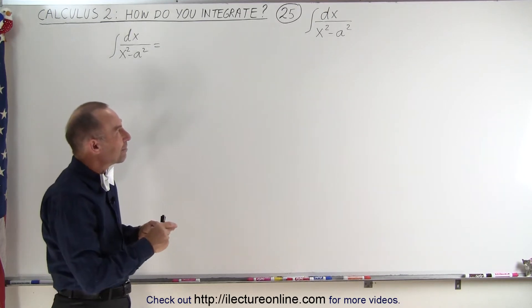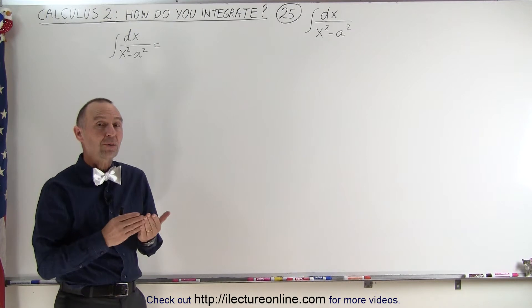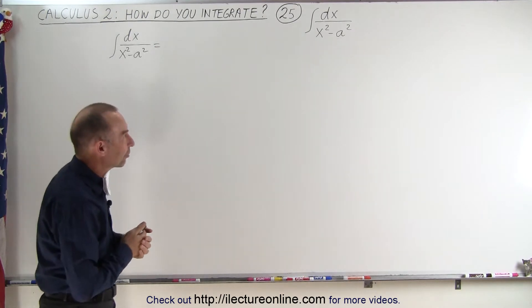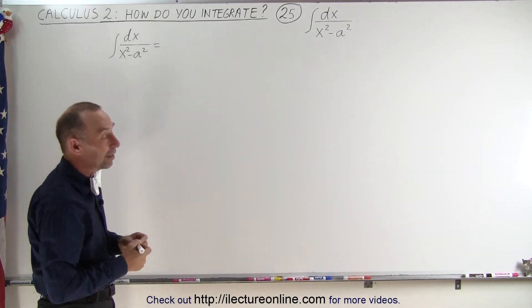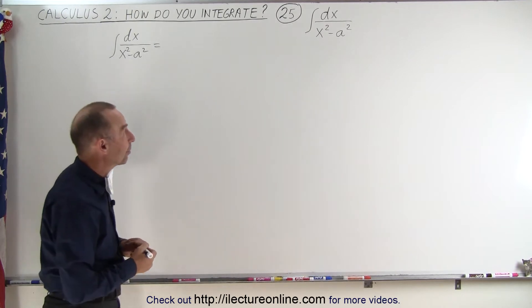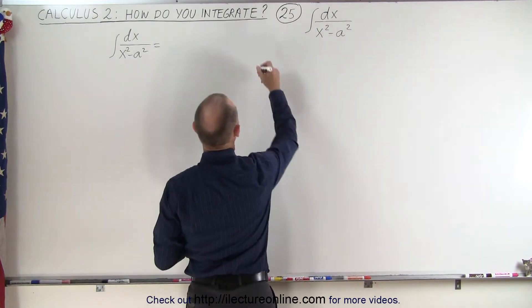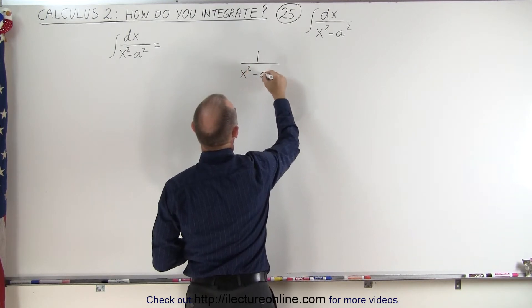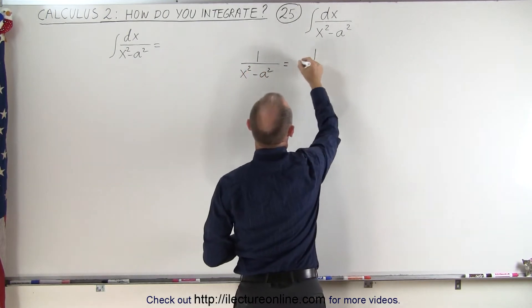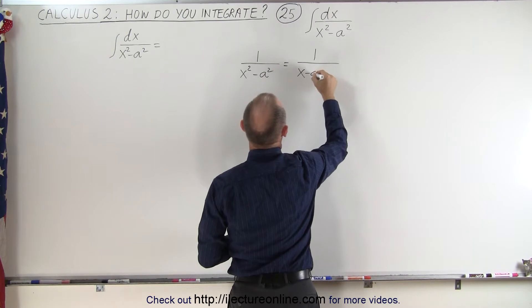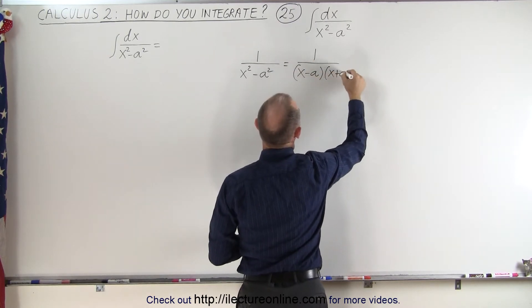The technique remains the same. Since we have the difference of squares, we can actually use that technique called partial fractions. Let's go ahead and do that and see what the result ends up to be. So we can say that 1 over x squared minus a squared can be written as 1 over x minus a times x plus a.